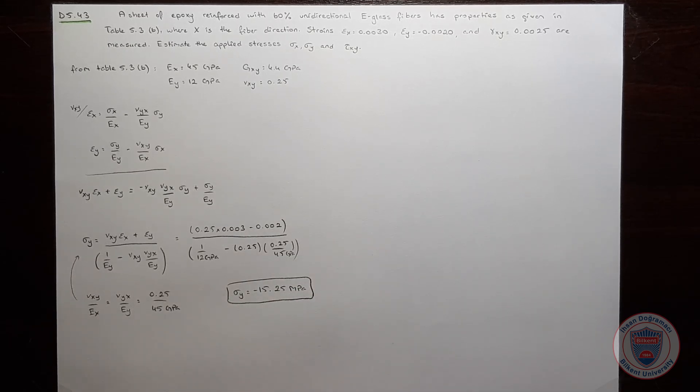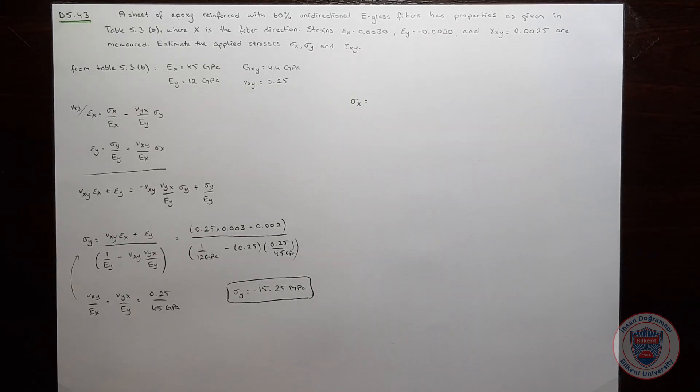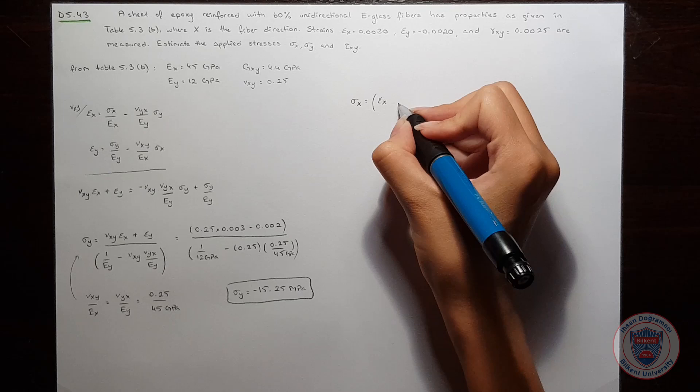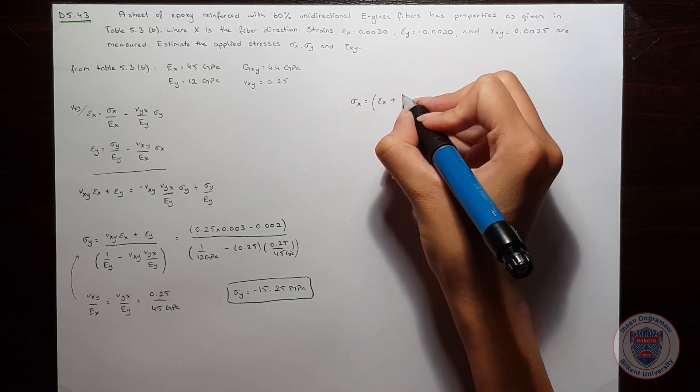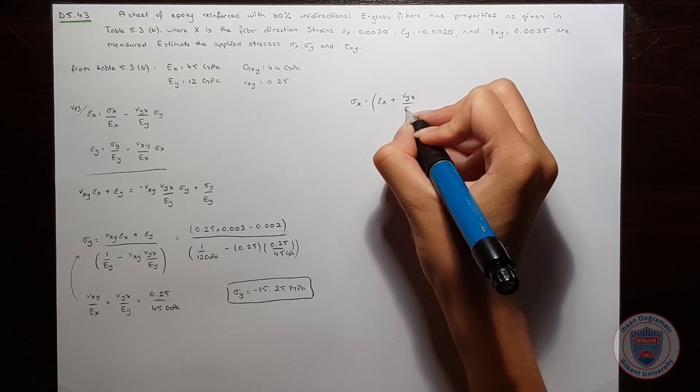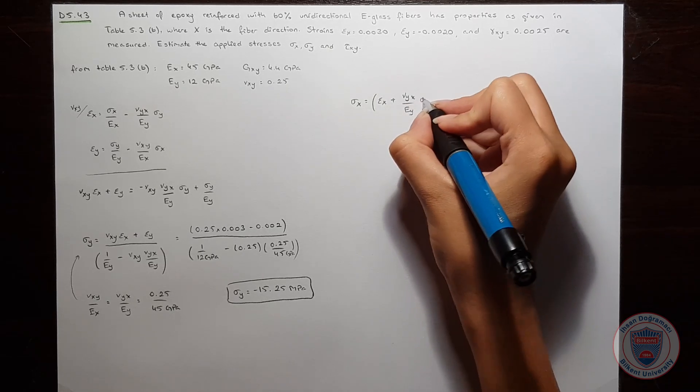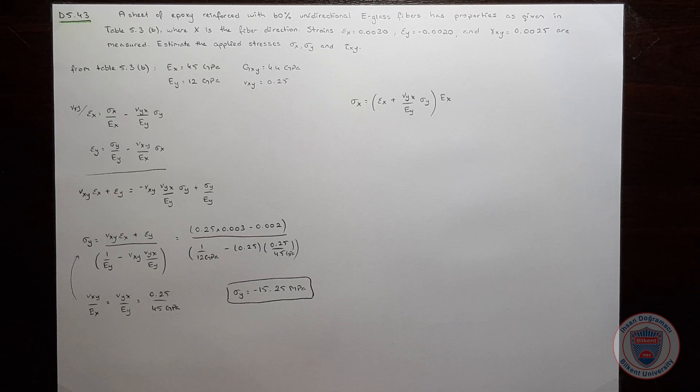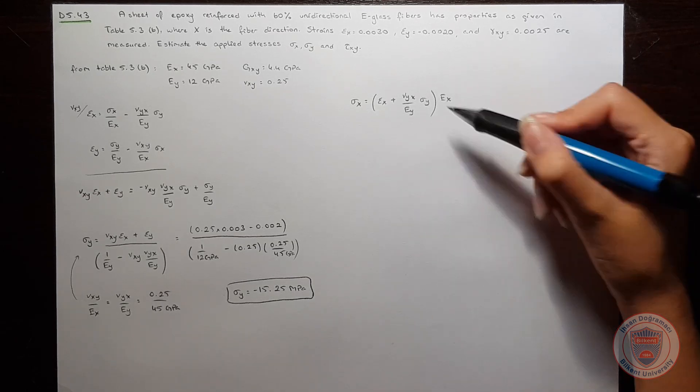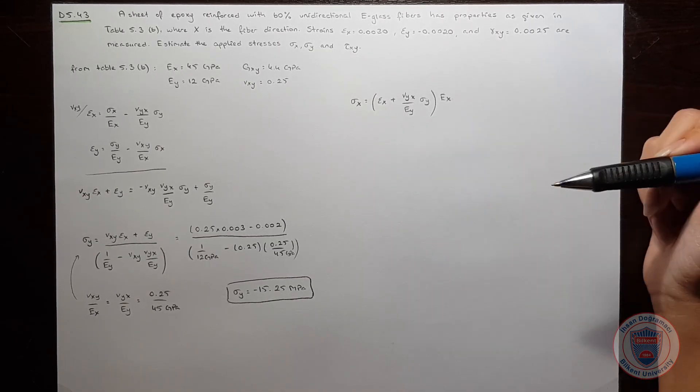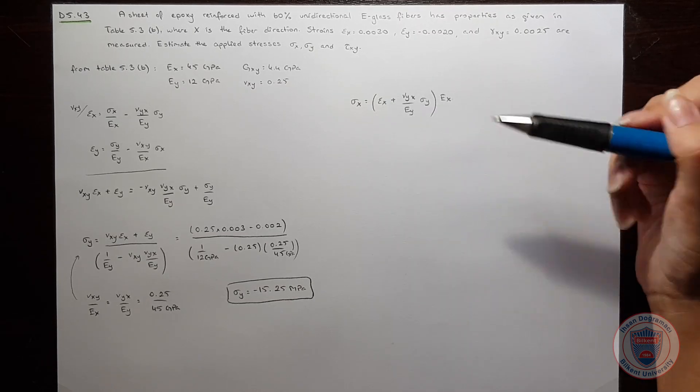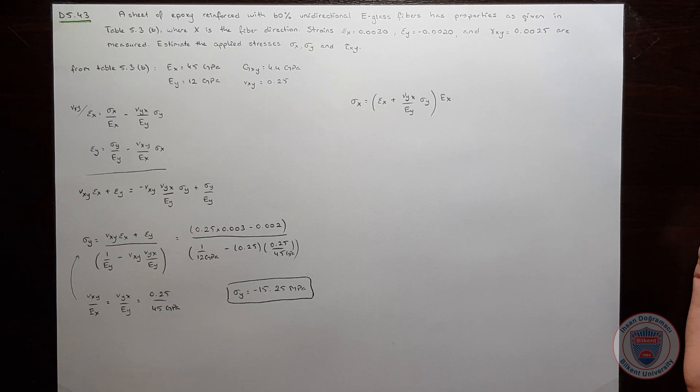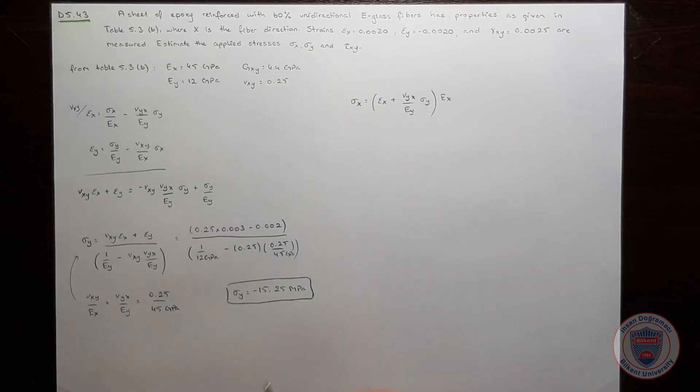Let's compute σx then. σx is equal to εx plus νyx over EY times σy times EX. Again we have all the values for the equation. We know εx, we know this ratio, we know σy, and we know EX. When we substitute the values and compute...